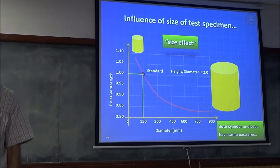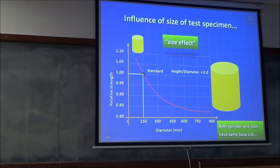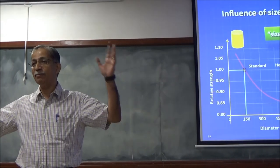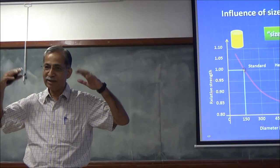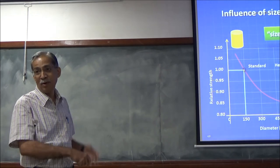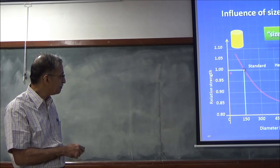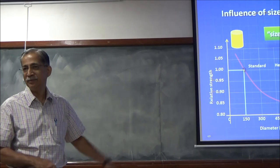Whether you take a cylinder or cube, if the volume increases the chance of defects coming in is more and you get a drop in strength, but it tapers off at the lower end — beyond a certain size it doesn't keep dropping. Variation is from about 15% less to about 10% more than the standard.